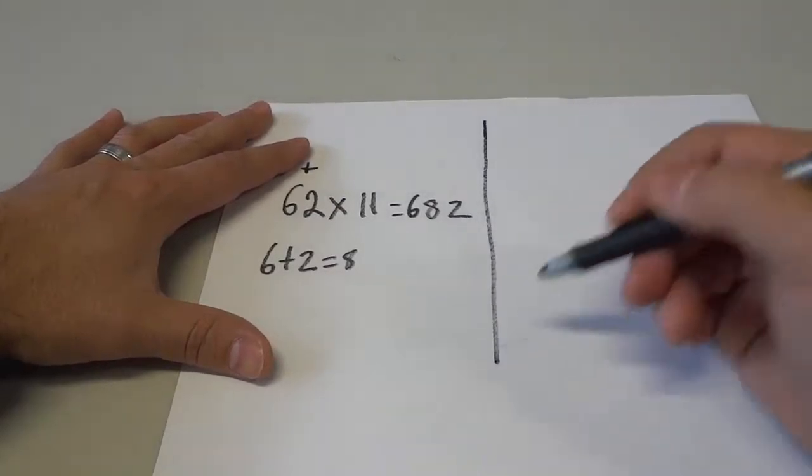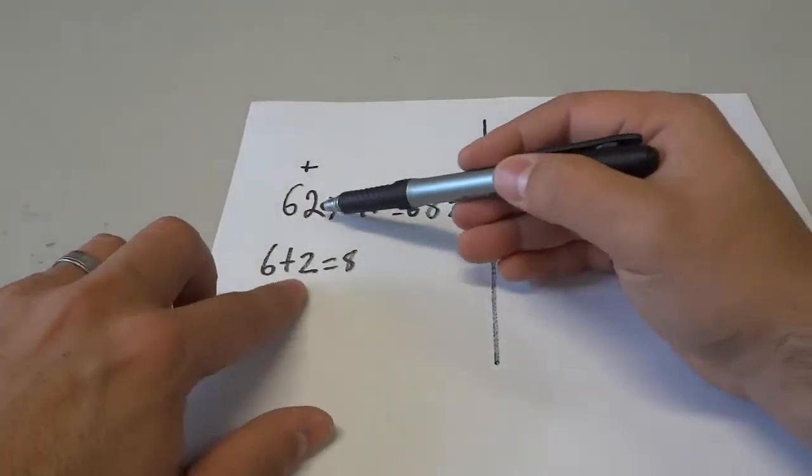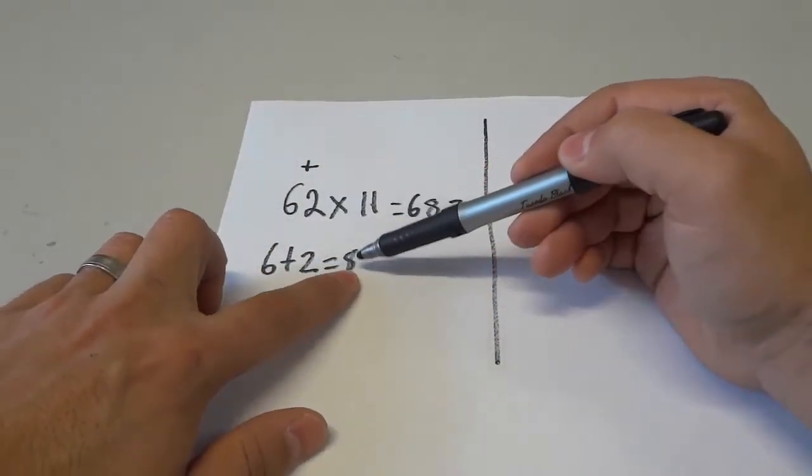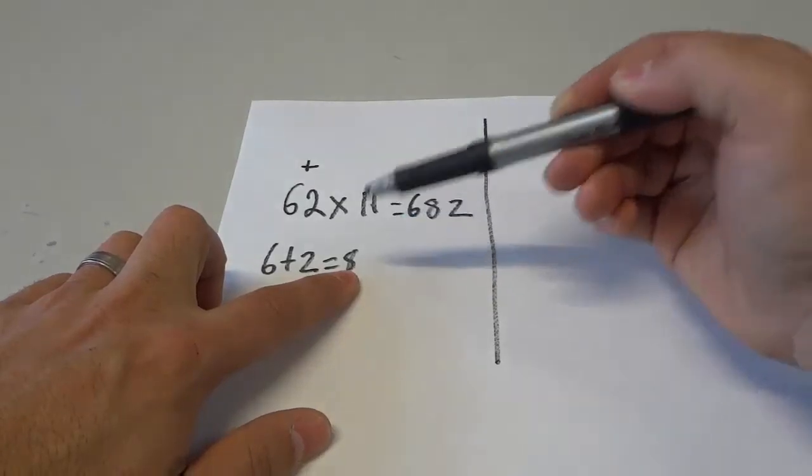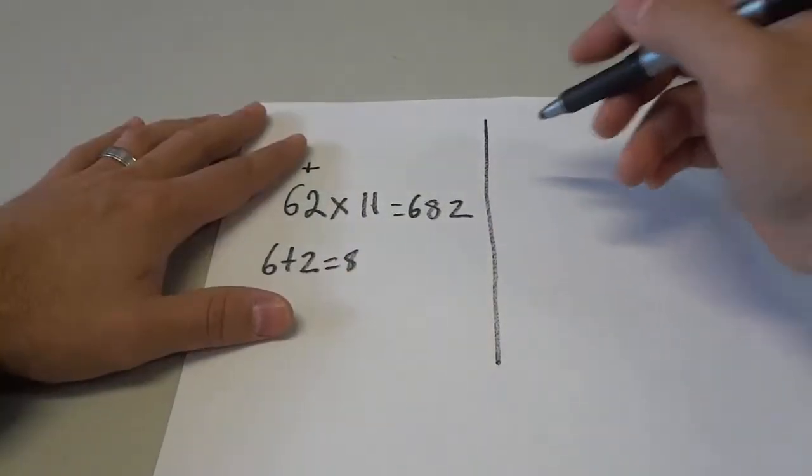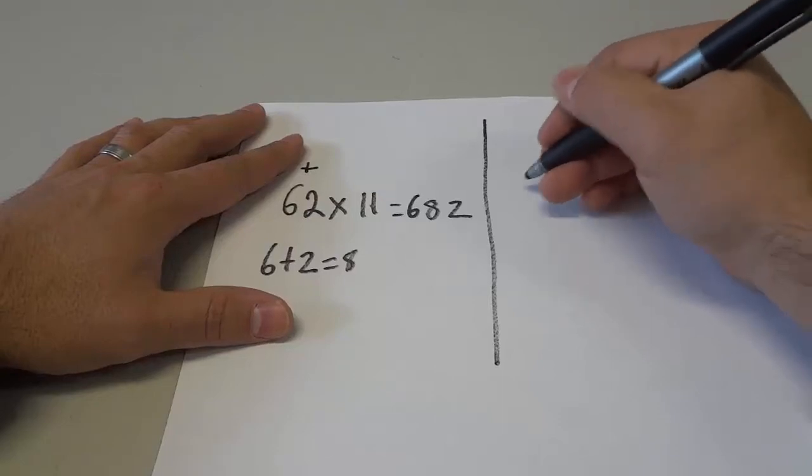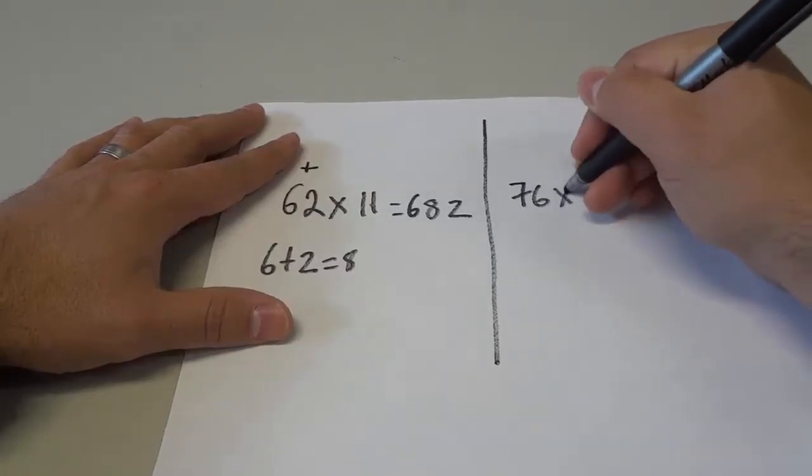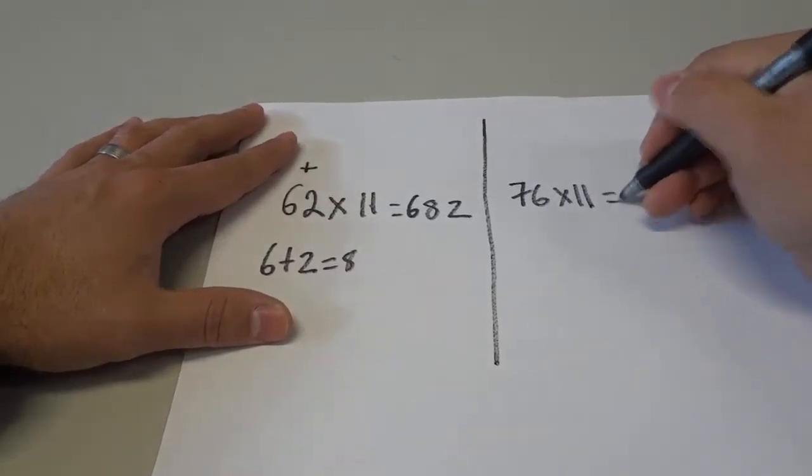Now I'm going to give you another example because sometimes when you add the non-11 numbers together, you're going to get a number that is two digits long. So I'm going to show you how to do that. So let's say that we have 76 times 11.